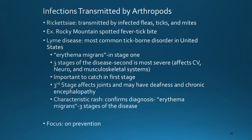Rickettsial infections are transmitted by infected fleas, ticks, and mice. An example is Rocky Mountain spotted fever, caused by a tick bite. Another tick-borne disorder is Lyme disease. In stage 1, you would see erythema migrans, which confirms the diagnosis. There are three stages. The second is the most severe, affecting the cardiovascular, neurological, and musculoskeletal systems. The third stage affects the joints, and the individual may also have deafness and chronic encephalopathy. It is important that Lyme disease be caught in the first stage.